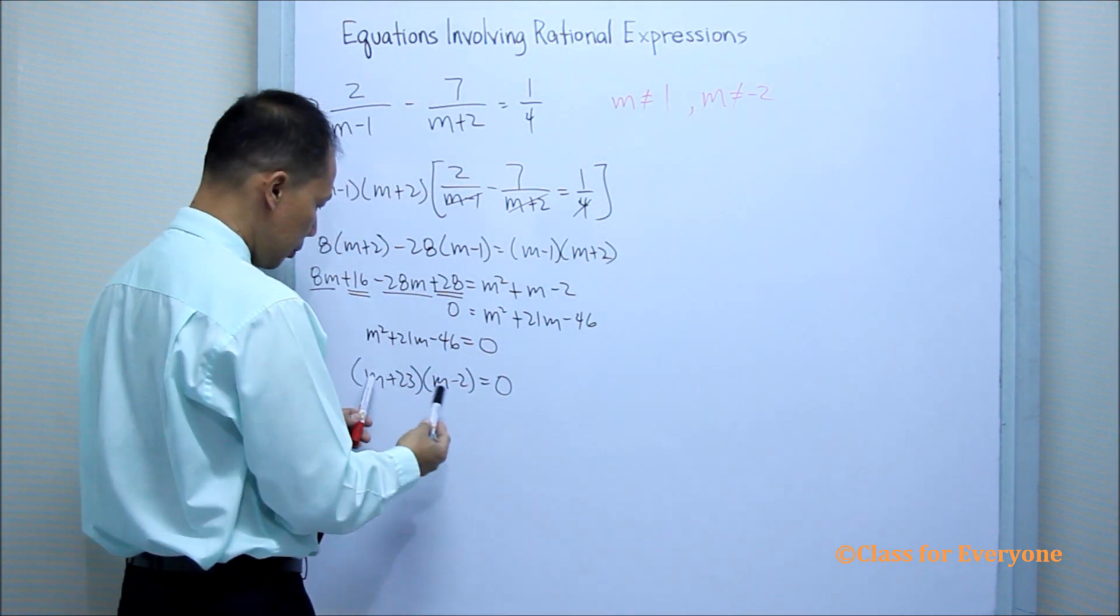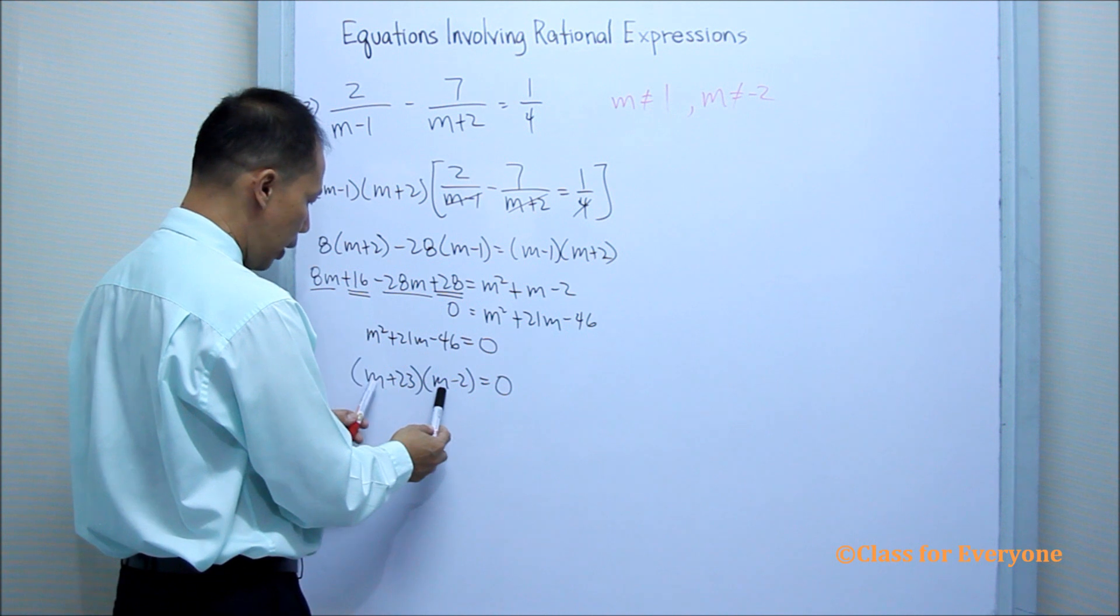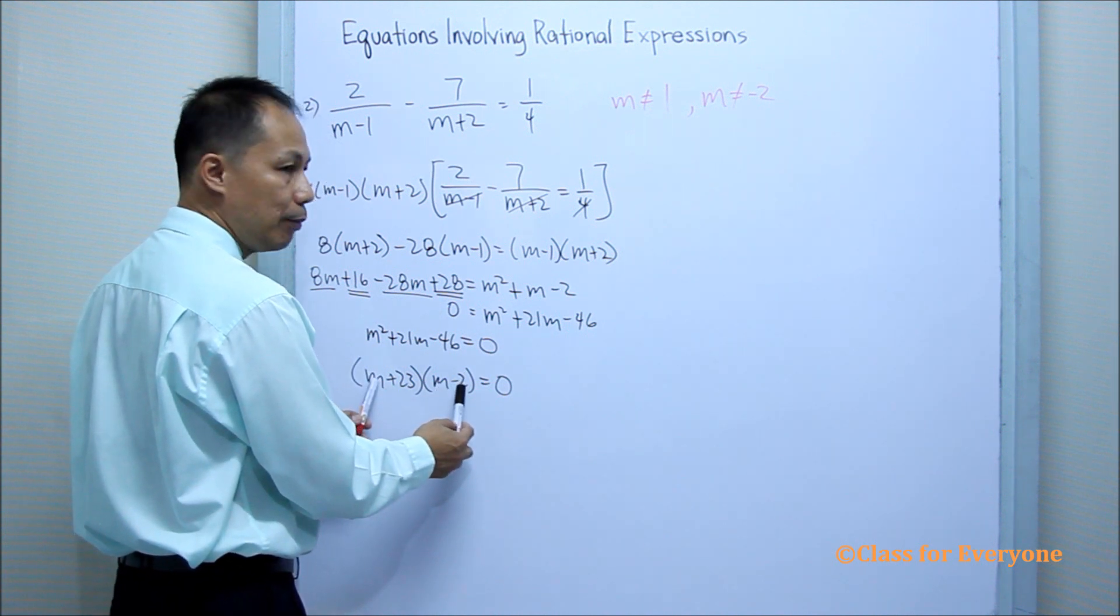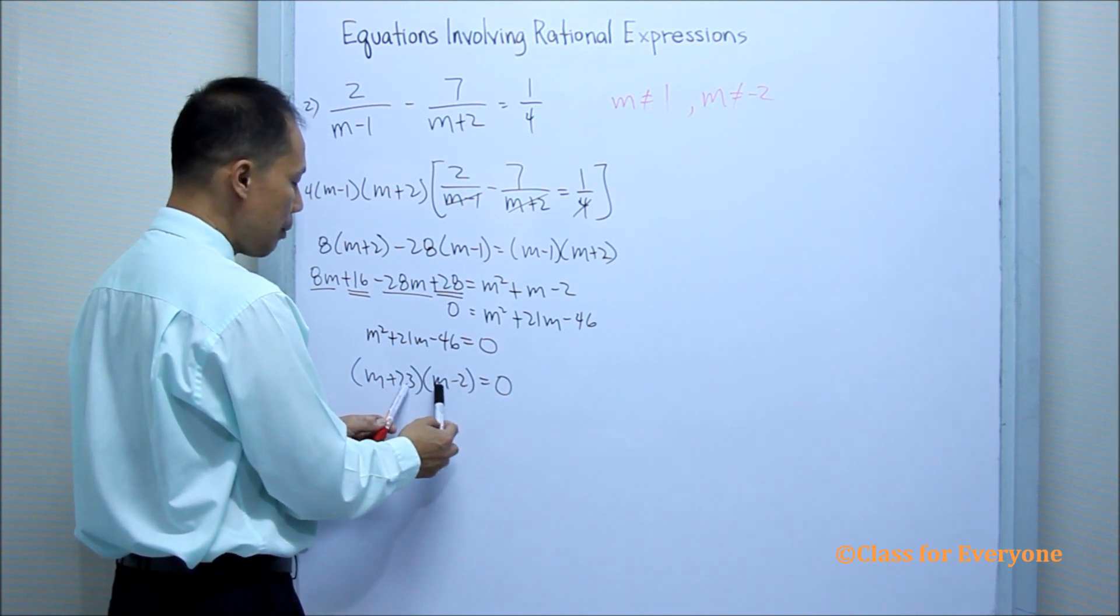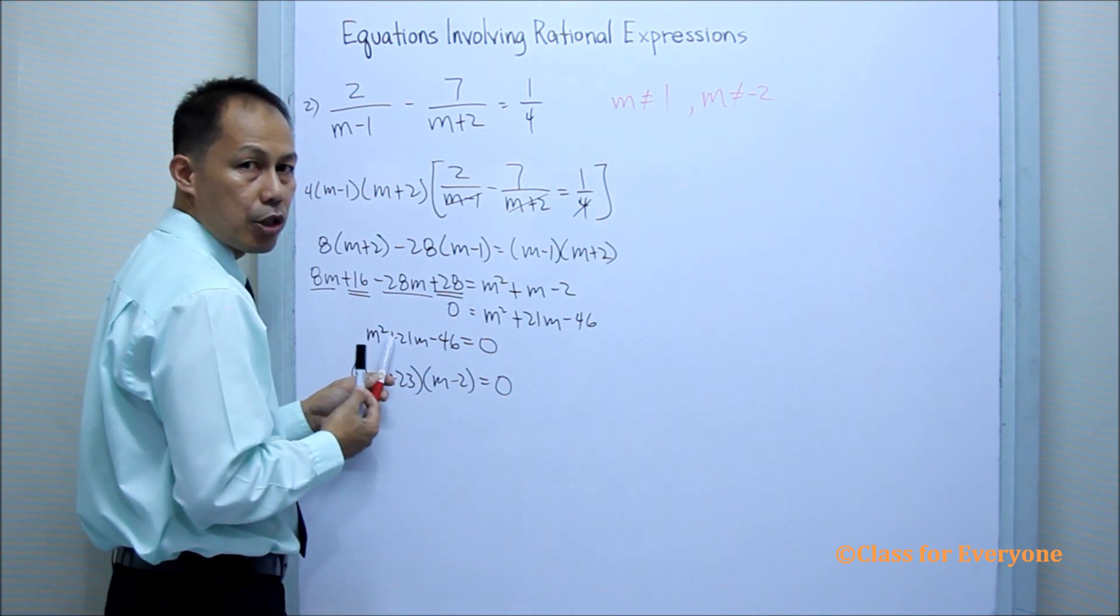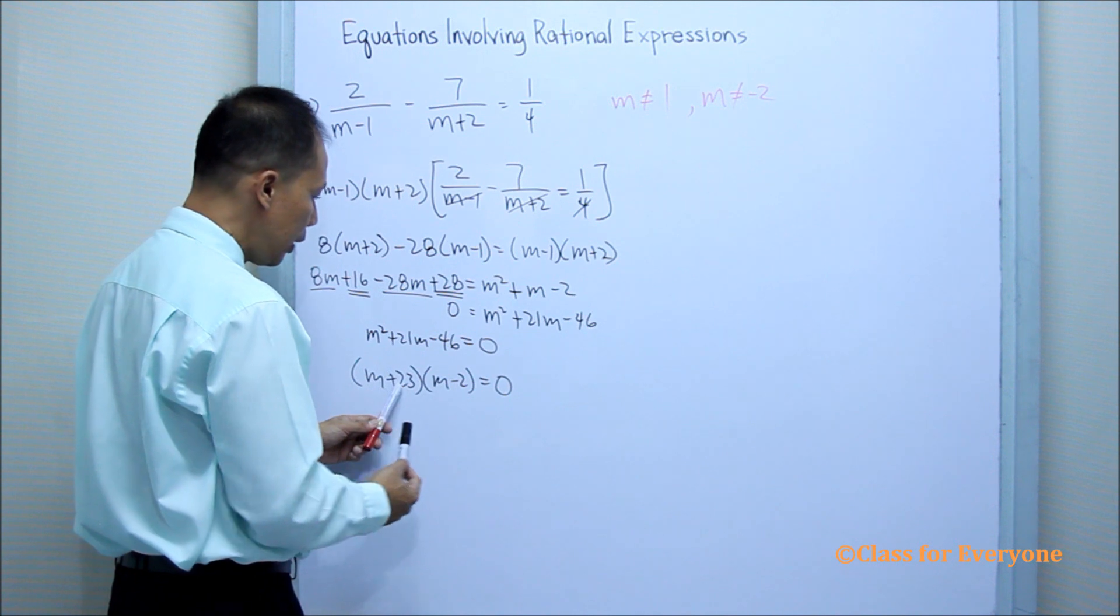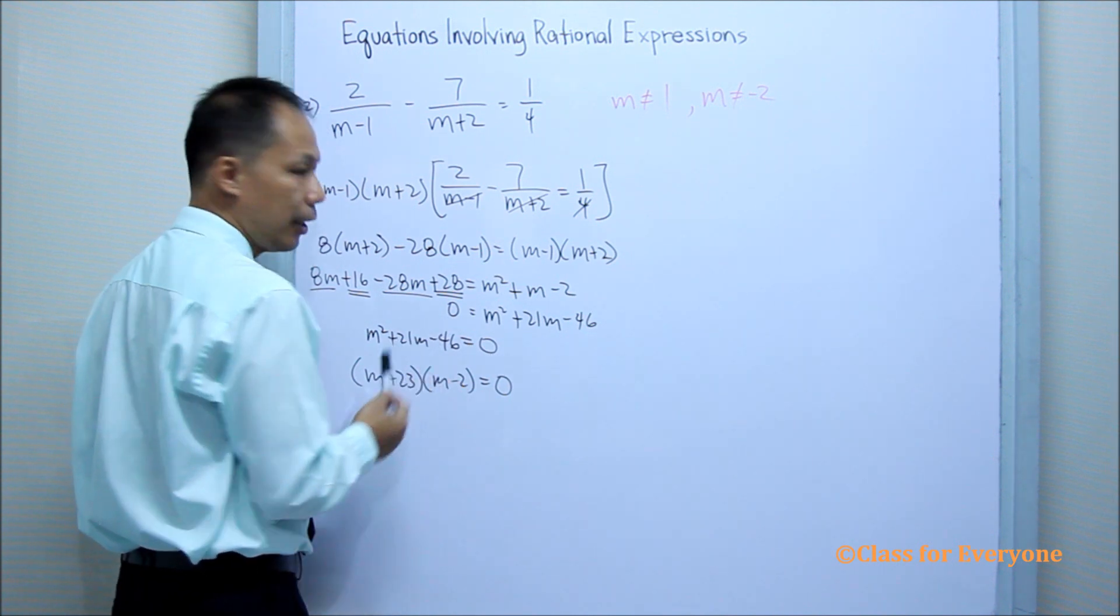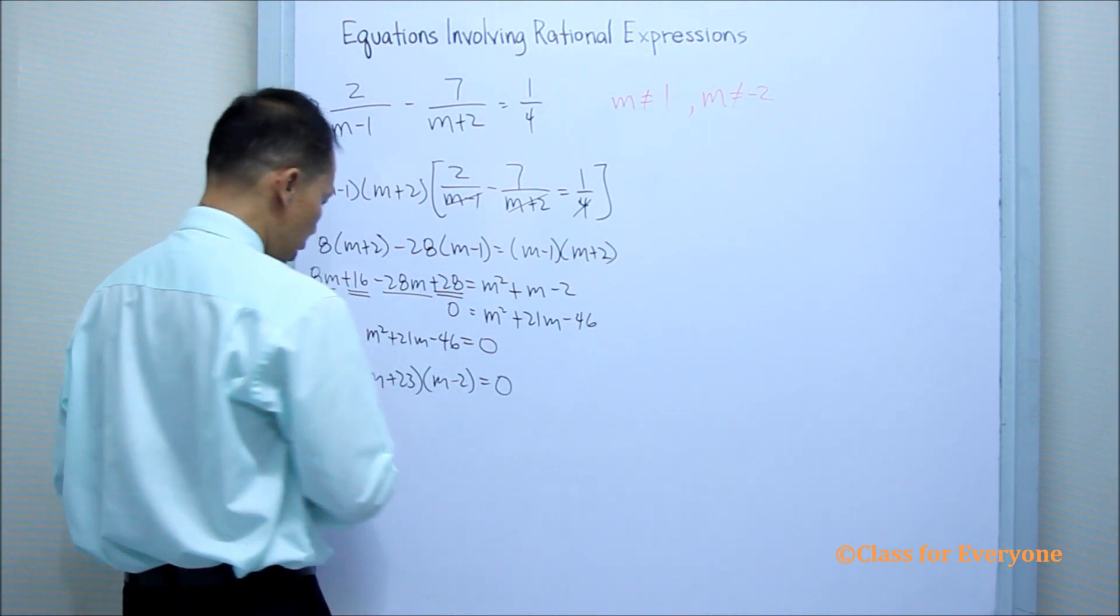Then check it again. m times m is m squared. Here m times negative 2 is negative 2 m. 23 times m is positive 23 m plus negative 2 m. Now it is positive 21 m. 23 times negative 2 is negative 46.